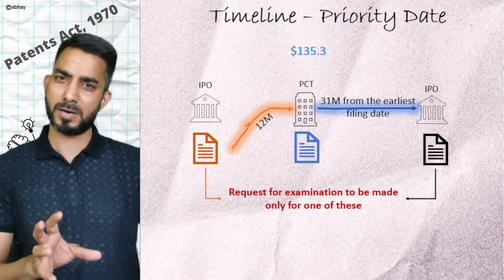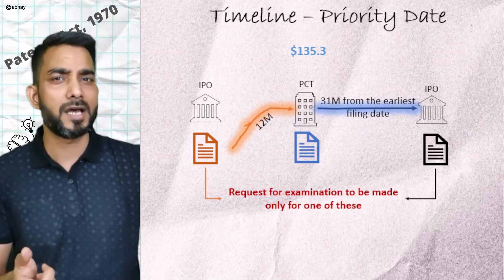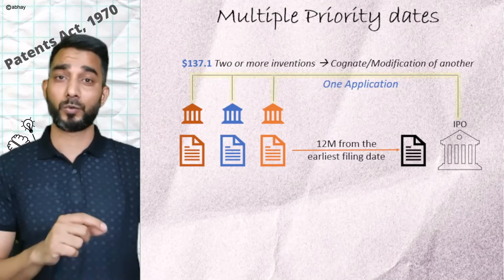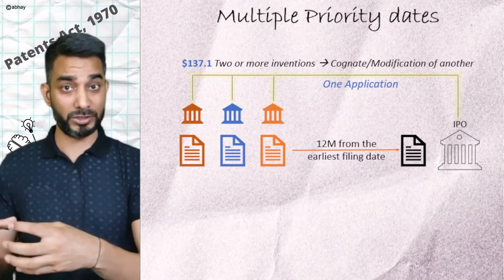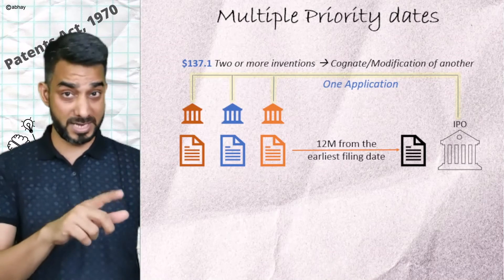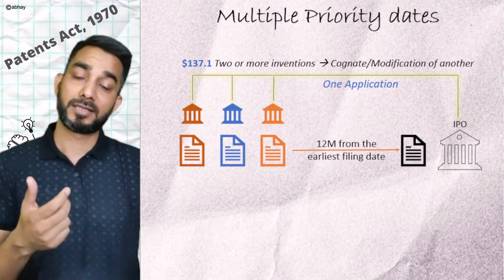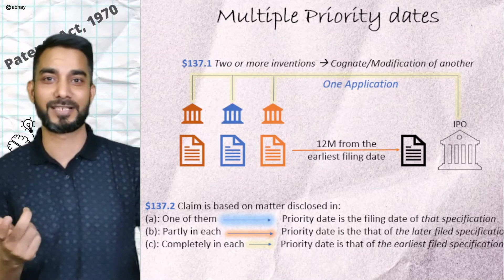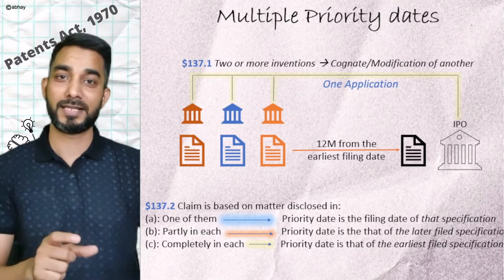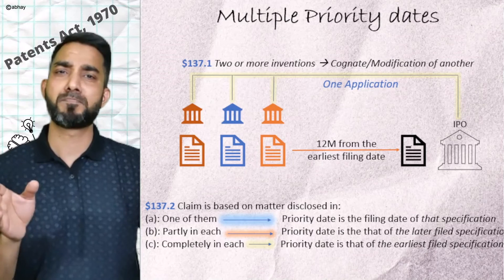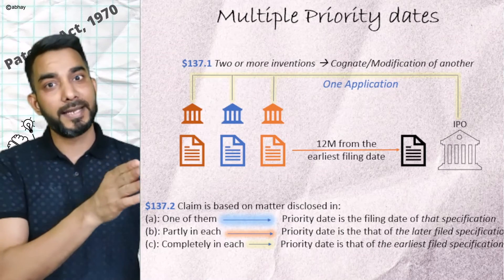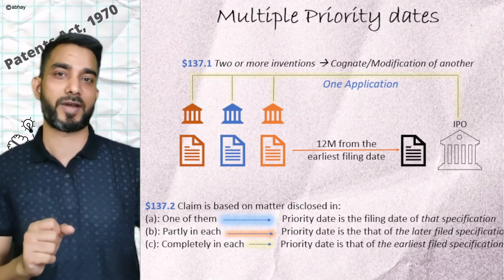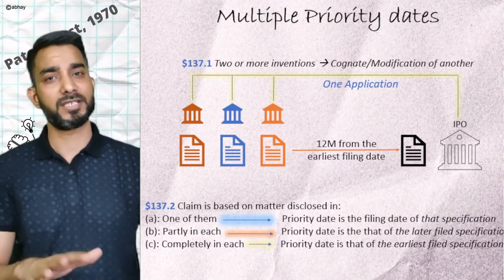When claiming priority from multiple applications, how do we decide the priority date of a claim in the convention application? The priority date of a claim is decided based on where the matter was first disclosed completely. Quick recap: if the claim is disclosed in one of them, the priority date is of that particular specification. If it is disclosed partly in one or more of them, the latest one applies. If the subject matter was disclosed completely in each one, the priority date is taken from the earliest filing date.